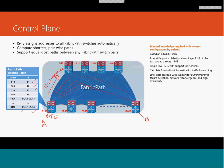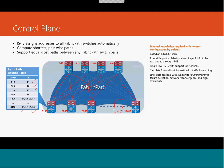Since FabricPath runs IS-IS, you have the capability of managing multiple topologies — for example, multi-topology zero and multi-topology one. You can run separate topologies on different parts of the fabric and they can maintain their own forwarding decisions. The same multi-topology capabilities available in standard IS-IS are also available in FabricPath.